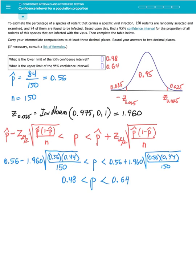I am working with proportion and I am trying to estimate the true population proportion of rodents that are infected with this virus. What I know is the sample proportion p-hat is computed by 84 divided by 150 where 84 rodents were infected out of 150 examined. This ends up being 0.56. So that is my point estimate. Sample size is 150.